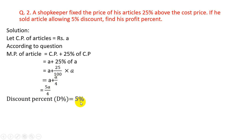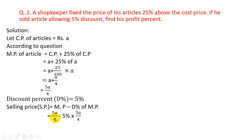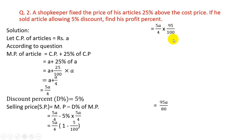Discount percent = 5%. SP = MP − discount% of MP = 5A/4 − 5% of 5A/4. Taking 5A/4 as common: SP = 5A/4 × (1 − 5/100) = 5A/4 × 95/100. Taking LCM gives 95/100, so SP = 5A/4 × 95/100 = 95A/80 = 19A/16.